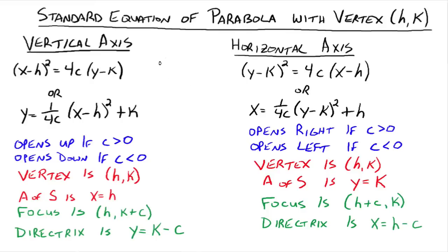To figure out the focus: picture the parabola opening up, with the vertex at h, k. The focus is inside the parabola, and that distance is c. What's changing from the vertex point to the focus point? The y value is changing — the x values stay the same. So the focus is h, and then we take the y part of the vertex and add the c value to it. The directrix is a horizontal line: y equals the y part of the vertex minus the c value. Once you know the c value, the vertex, and which way your parabola opens, you can figure out the focus and directrix pretty fast.